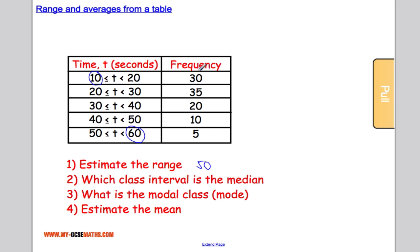Which class interval contains the median? Well, I'm going to, just like before, add up all the frequencies. That gives us a grand total of 100, which means the median is going to be somewhere between the 50th piece of data and the 51st piece of data. So let's work out the cumulative frequencies here. We've got 30, 30 and 35 is 65, 65 and 20 gives us 85, 85 and 10 is 95, 95 and 5 is 100.